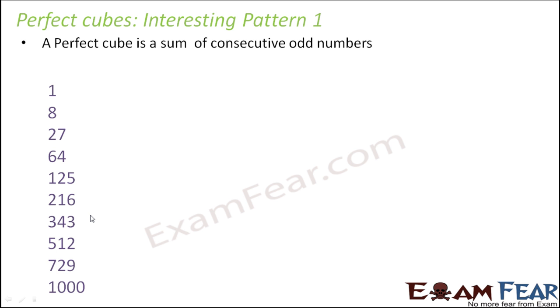So these are the first few perfect cubes that we have seen. Let's see how they are sum of consecutive odd numbers. 1 is anyways 1. When it comes to 8, you would see that 8 is sum of 3 plus 5. They are consecutive odd numbers. When it comes to 27, it is sum of 7 plus 9 plus 11, again consecutive odd numbers.